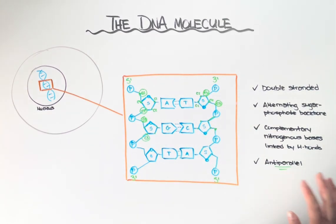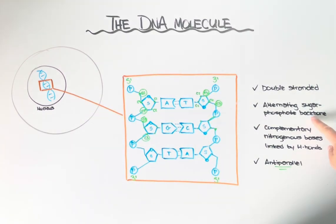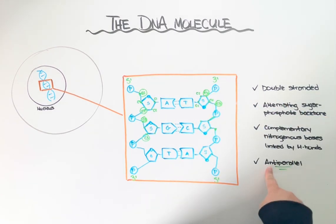That explains how the backbone of the molecule is arranged. We have an alternating sugar phosphate backbone. That sugar, again, is a deoxyribose sugar. And each side is anti-parallel to one another.